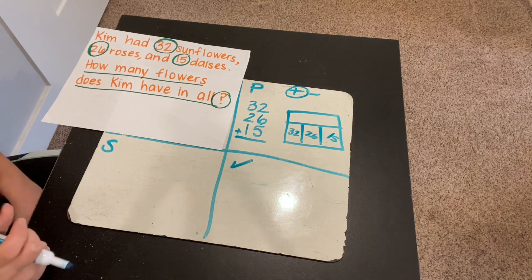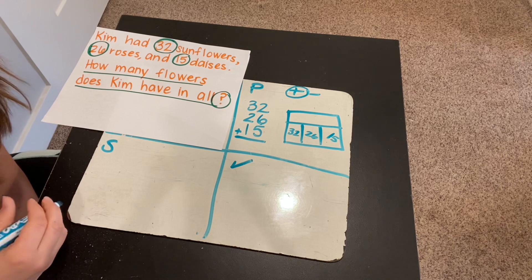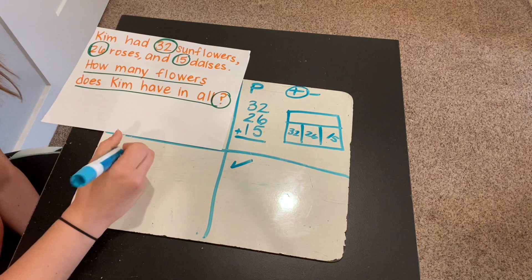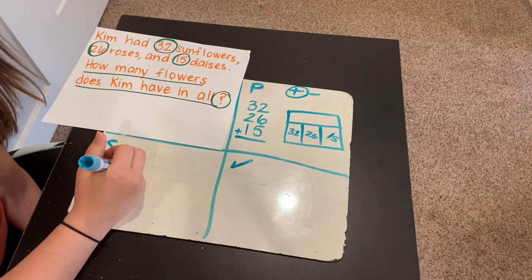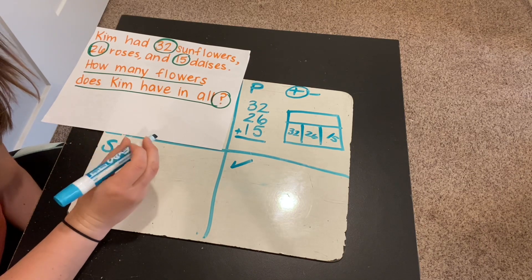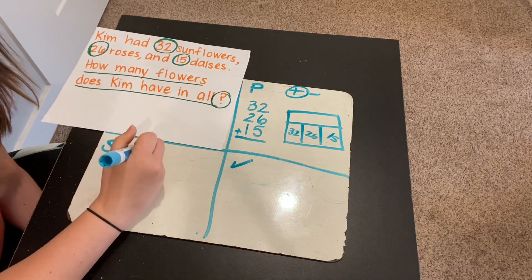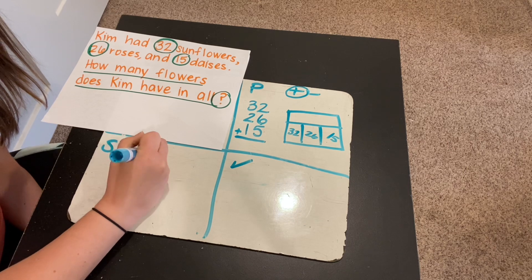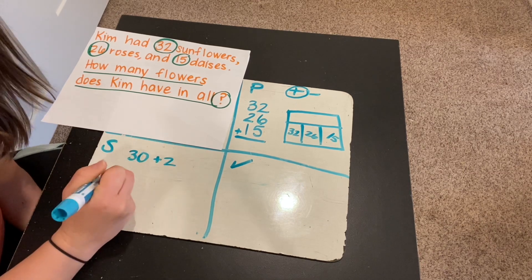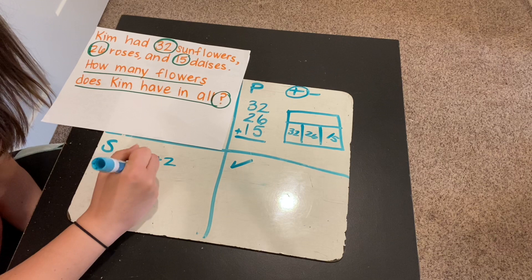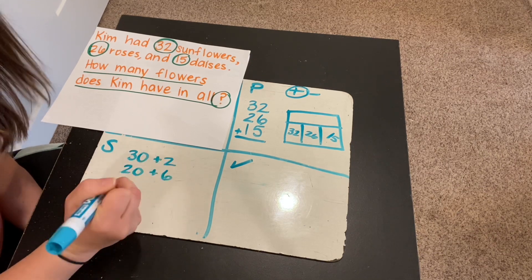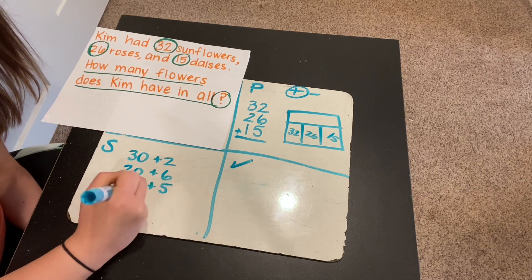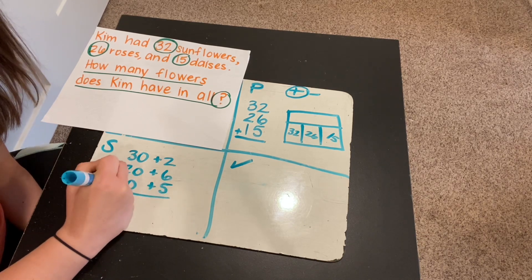Okay, so now let's get ready to solve this problem. I think to solve this one, I may do... I think I'm going to do expanded form addition. Okay, so what I need to do is expand each number. So 32 is 30 plus 2. 26 is 20 plus 6. And 15 is 10 plus 5.